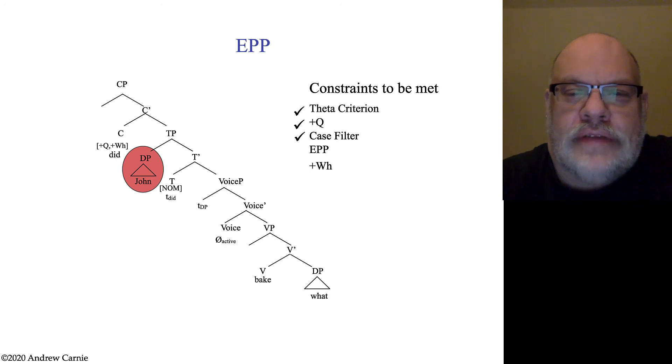As it happens, this DP down here is in its theta position, but this is also its case position. Because this is a position as complement to the verb where it can get accusative case. So, after we've done this movement, the case filter is met. Now, it's also the case that that movement met another constraint, the constraint of the EPP, the constraint that every sentence have a subject, where subject is defined as the specifier of a TP. And indeed, once you've moved this guy into the specifier of the TP, we've met that condition.